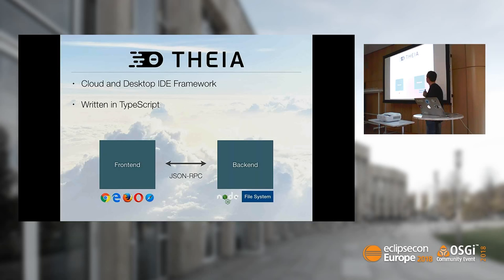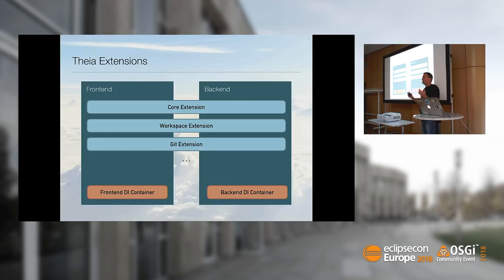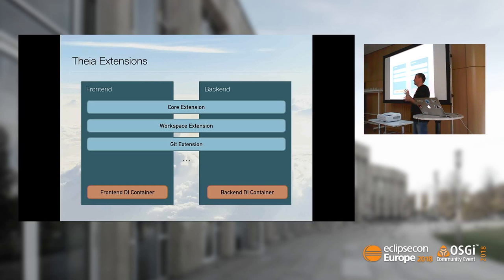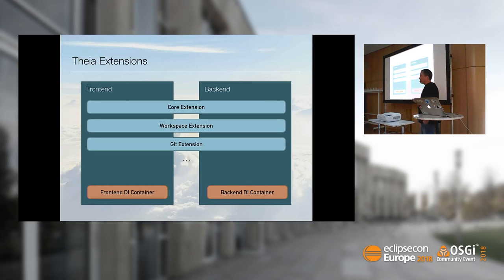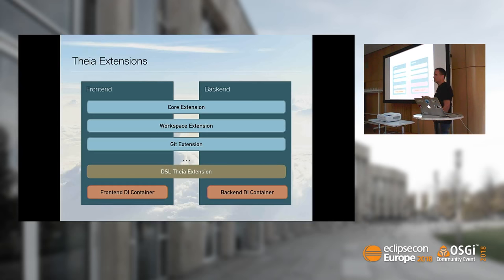In Theia, a Theia application is composed of extensions. In fact, everything in Theia is an extension — even the core of Theia itself is an extension. You can think of it as a plug-in system. These extensions usually have contributions to both sides — the client IDE as well as the back end. They contribute by adding services to the dependency injection configuration of either the front end or the back end. So we have to create a DSL extension — a Theia extension for our DSL — in order to build our language server in there.